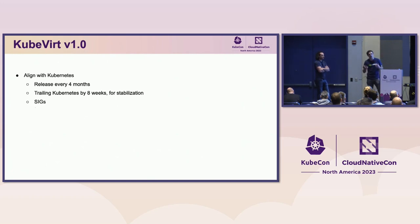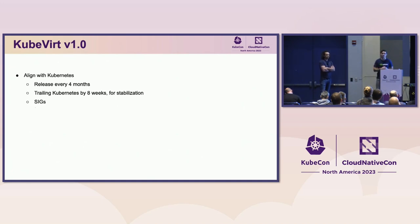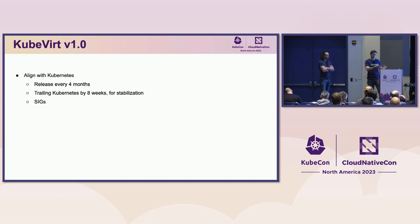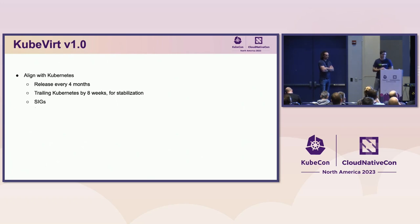In the same vein of aligning with Kubernetes, the other thing we want to do is create more SIGs. KubeVirt had some SIGs for a while, but we wanted to expand this concept for various reasons — like specialization, getting more ownership in different areas of the codebase. So we looked to explore that concept as another way to mature the project.